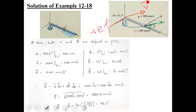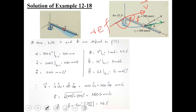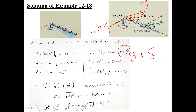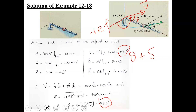For the overall angle which the velocity vector makes with respect to the reference line where motion started, we add theta plus sigma. Theta is 57.3 degrees and sigma is 56.3 degrees, giving an overall angle of 57.3 plus 56.3 equals 113.6 degrees. This is the total angle the velocity vector makes with the initial reference axis.